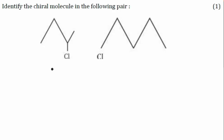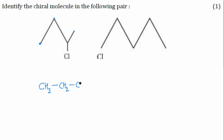Let's see this question: identify the chiral molecule. You have two molecules and you have to see whether they are chiral or not. For that, first we will see where in these molecules chiral carbons are present. This first molecule is in bond line structural representation — it has four carbons: CH3, CH2, CH, and then Cl and CH3.